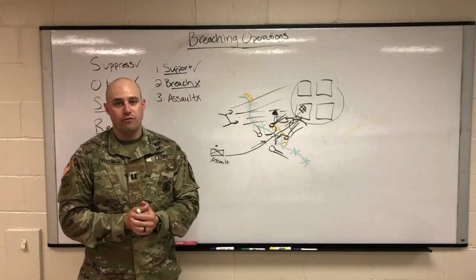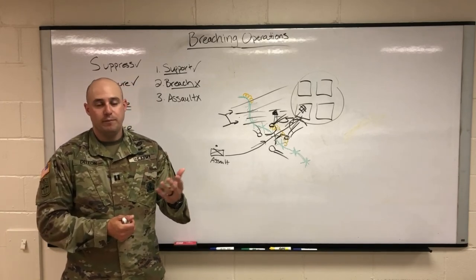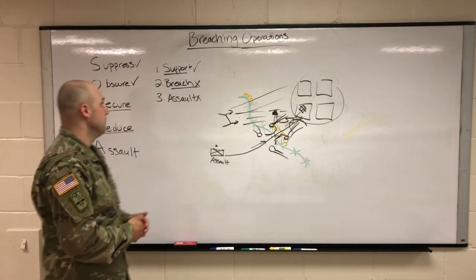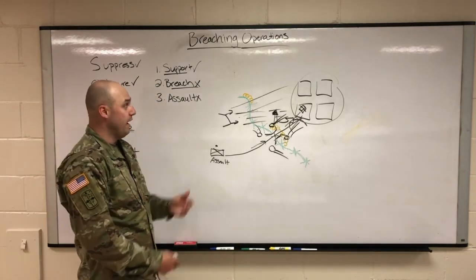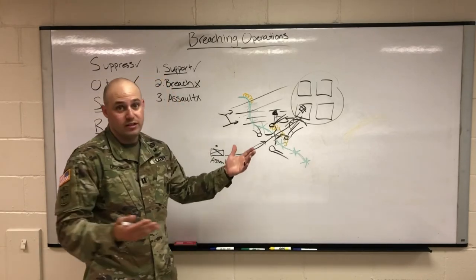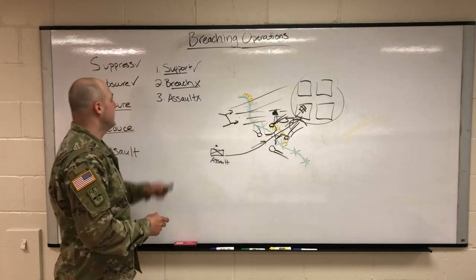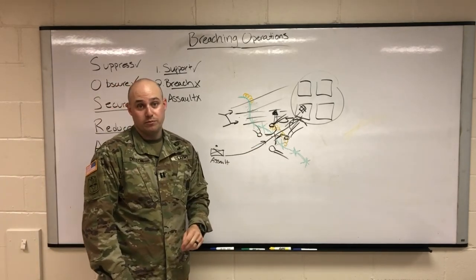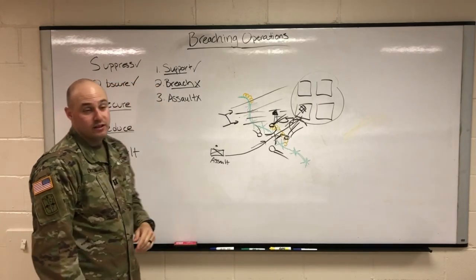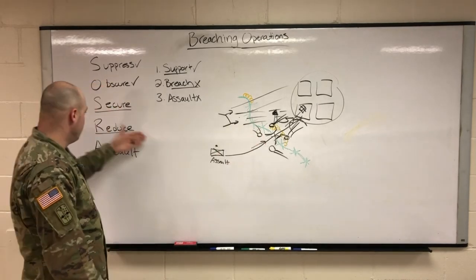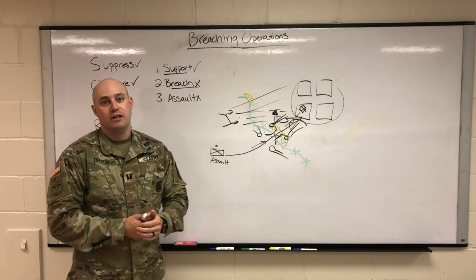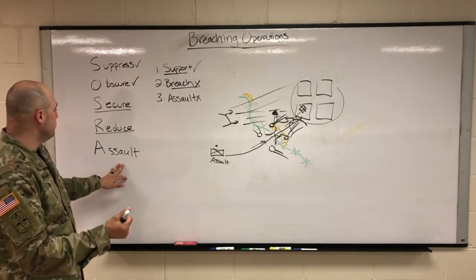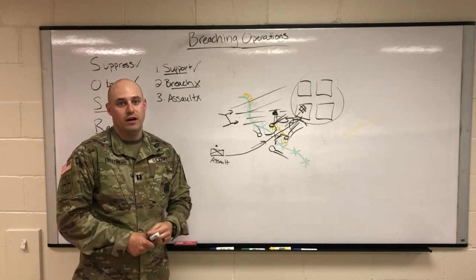Once the lane is open, the assault element moves forward, pushes through, and executes its mission — perhaps seizing the objective. The support by fire can then shift from focusing on the enemy protecting the lane to providing support by fire on the entire objective. The breach point is the decisive point in the operation. To summarize: you need a support element to suppress the enemy and obscure the breach point; a breaching element to secure the breach point and reduce the obstacle by creating a lane; and an assault force standing by so that the moment the obstacle is reduced, they assault through and execute the decisive operation on the objective.